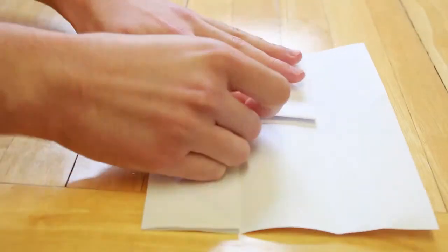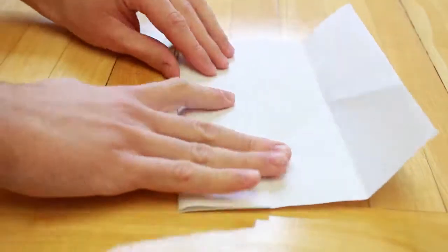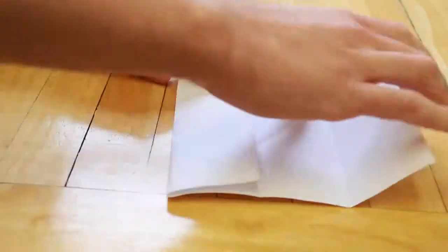Now unfold one of the edges, then fold the opposite corner to the second crease to create a triangle, then rotate the paper and repeat this step.